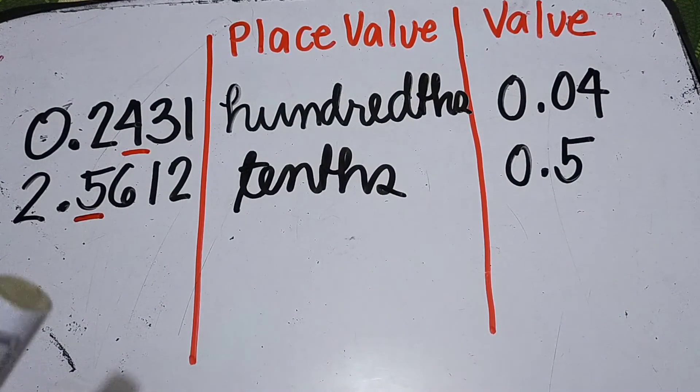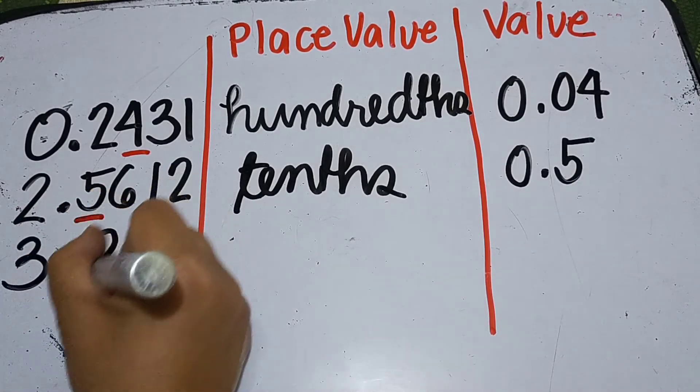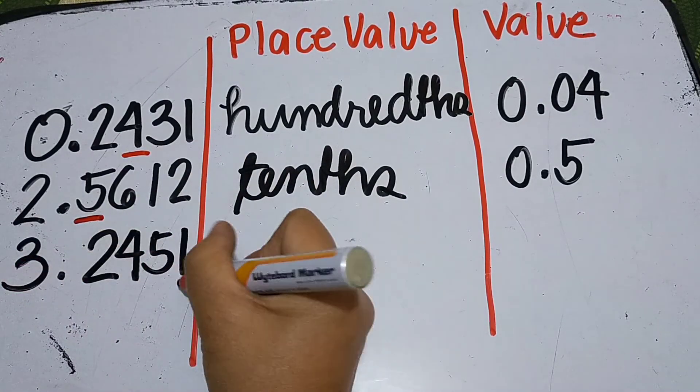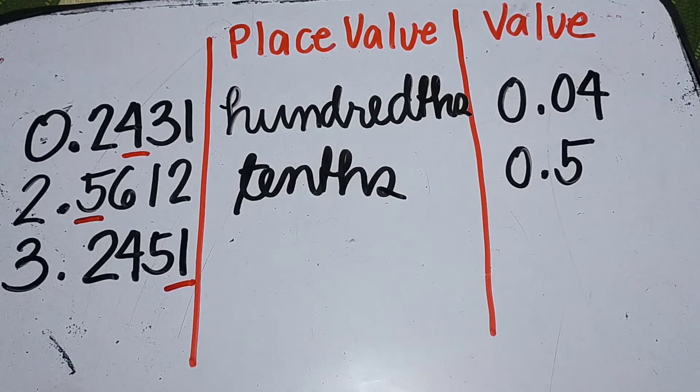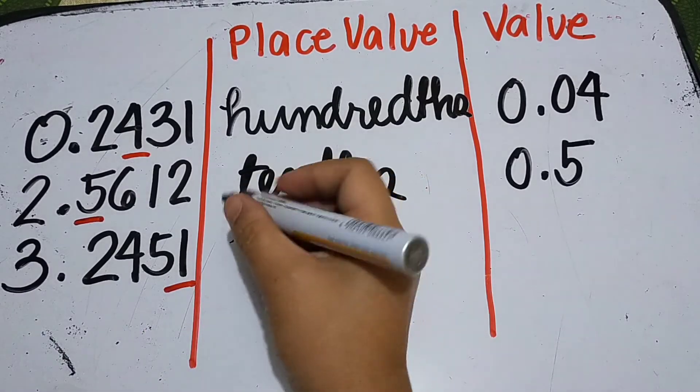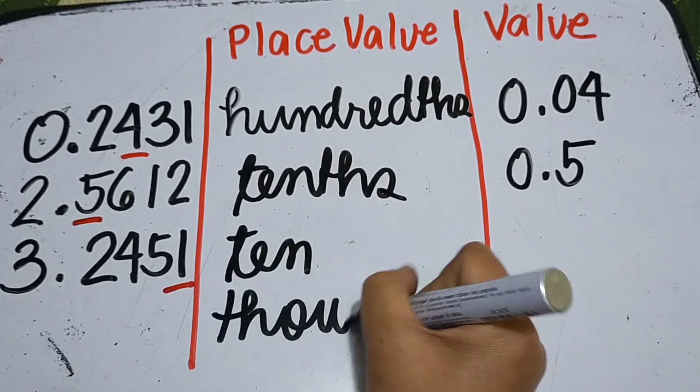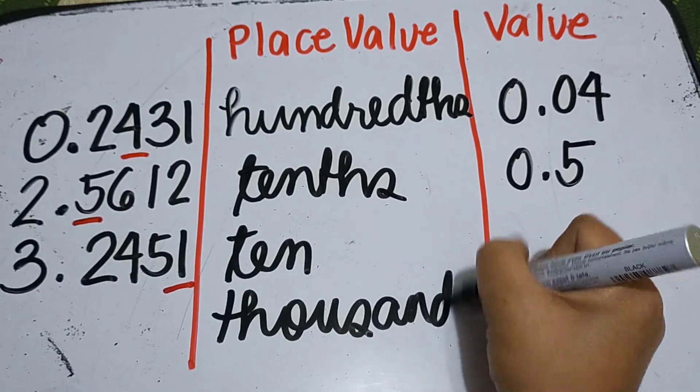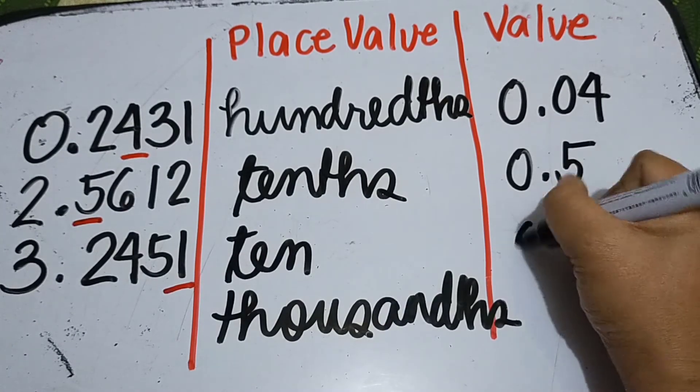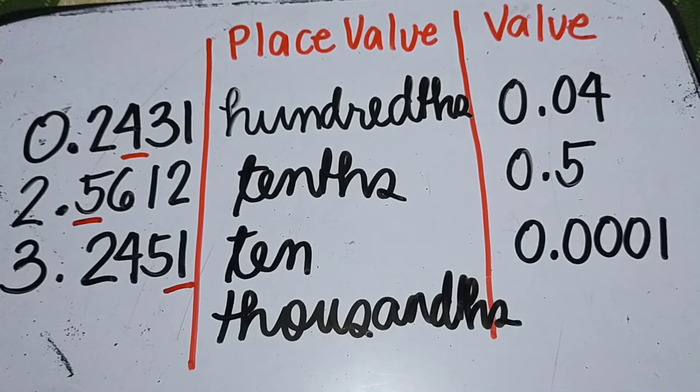Okay, so another example. So find the place value and value of one in this given decimal number. So tenths, hundredths, thousandths, ten thousandths. Then the place value of one is ten thousandths. And then its value is one ten thousandth.